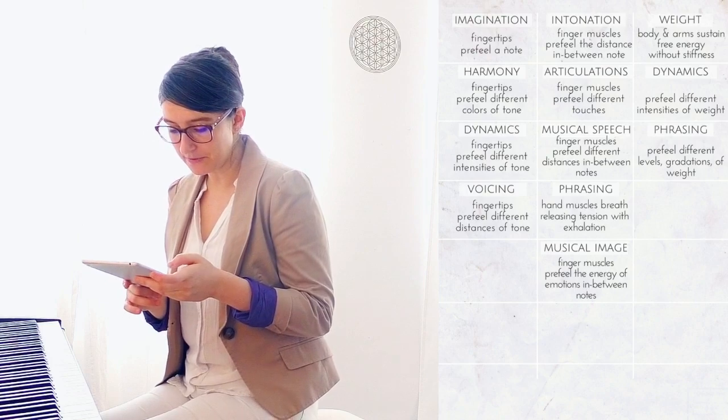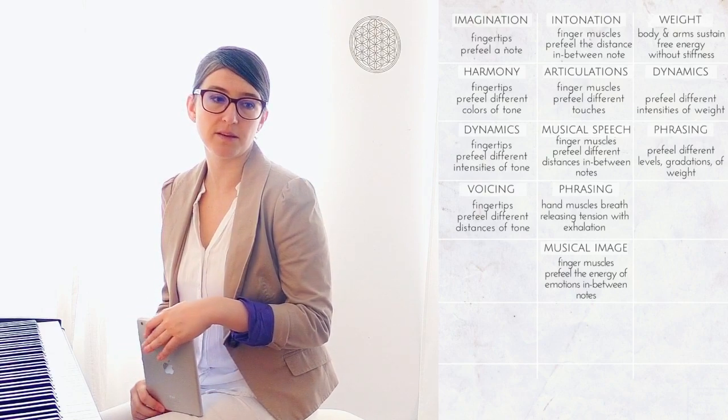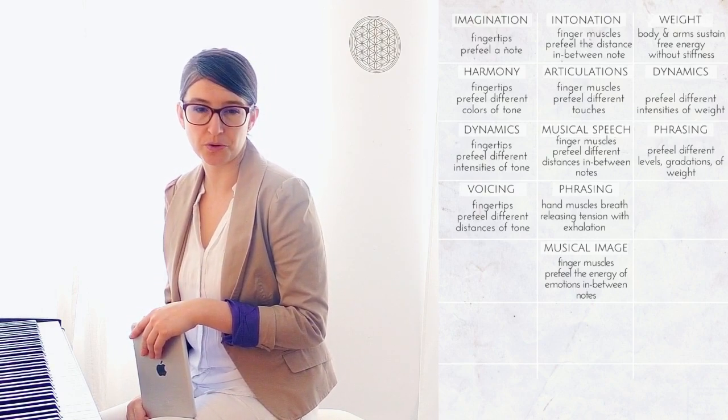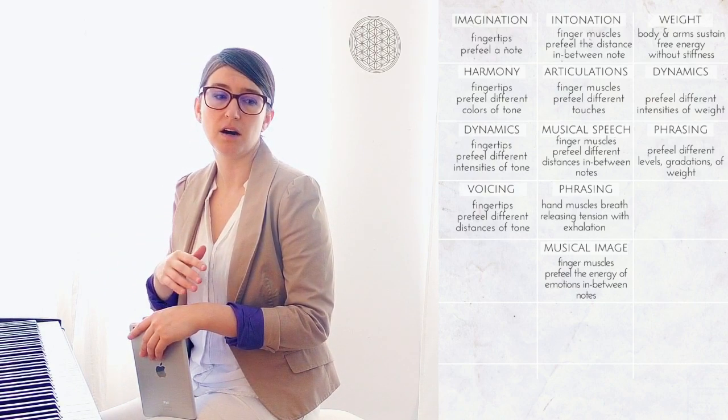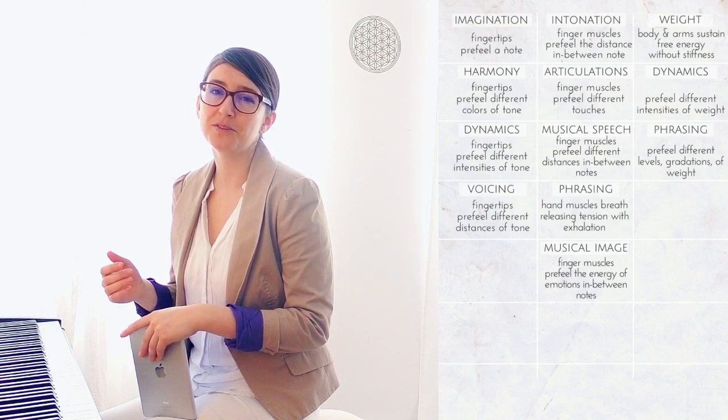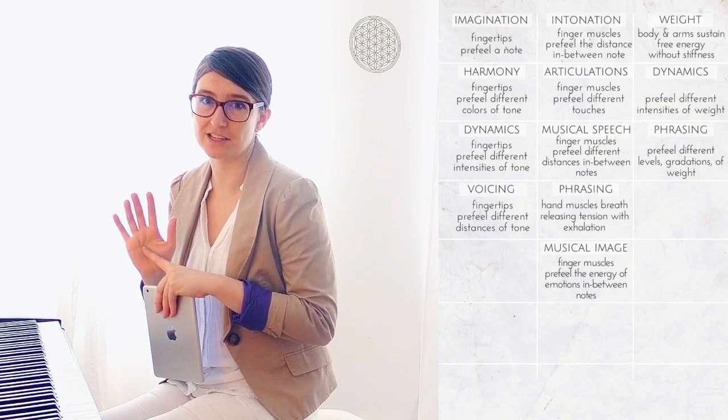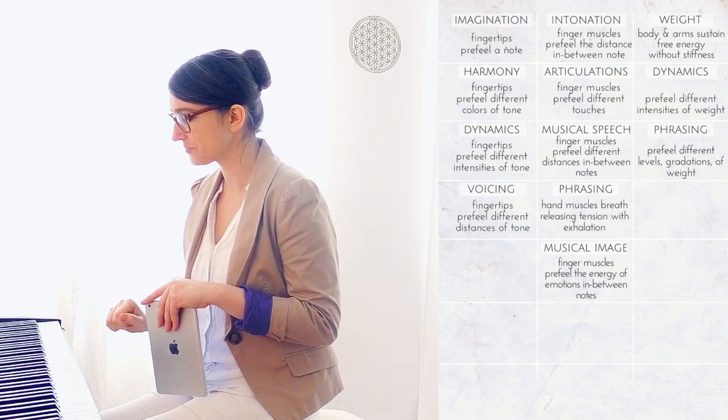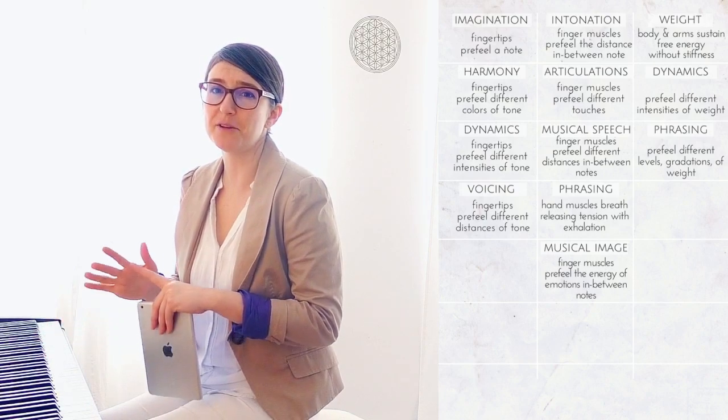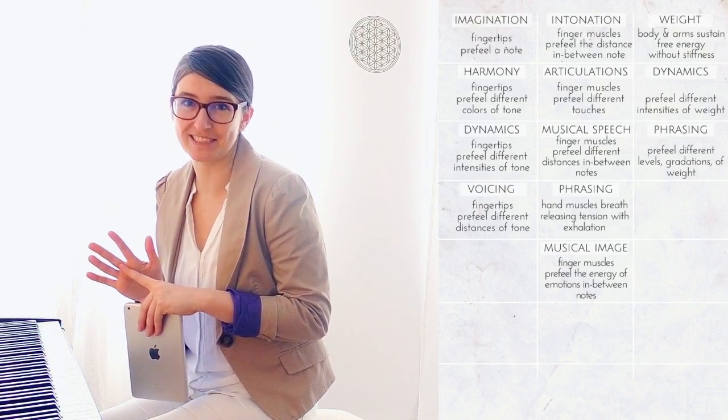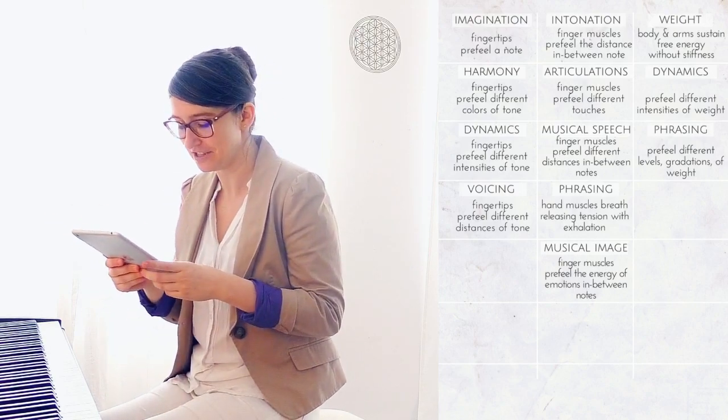Musical image helps finger muscles pre-fill the energy of emotion in between notes. So again, depending on the emotion that we want to express, whether it's joy or sorrow, our intonation will be changed. All of this will affect finger muscles because it connects to intonation and intonation rules finger muscles. And I really feel different energy in my finger muscles. So it really changes the energy and that changes the touch and changes the tone.